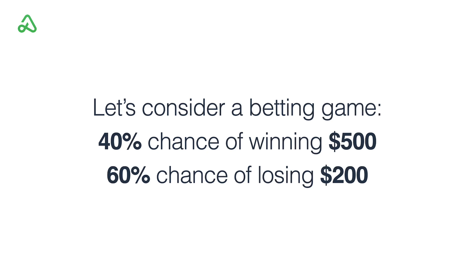The first thing we're going to do is consider a betting game, because this is really the best way to learn what expected value is — to learn it from the ground up using a very simple analogy. So there's a betting game — you can call it a coin flip game — where there's a 40% chance of winning $500 and a 60% chance of losing $200.